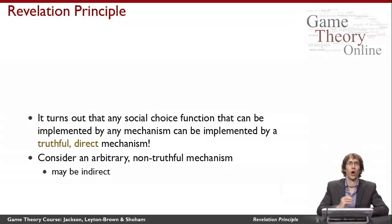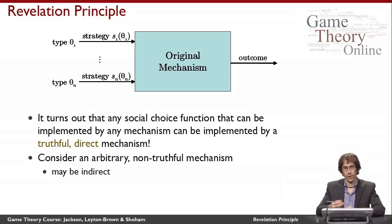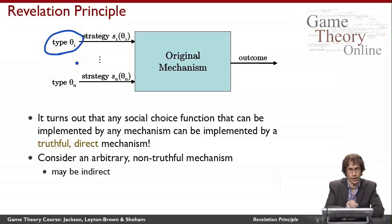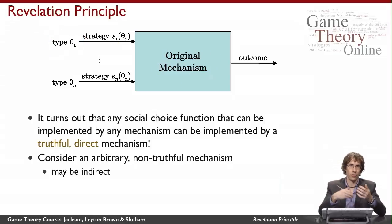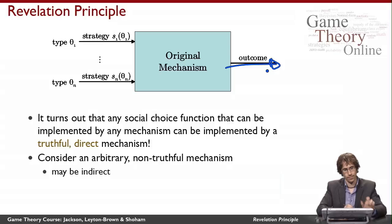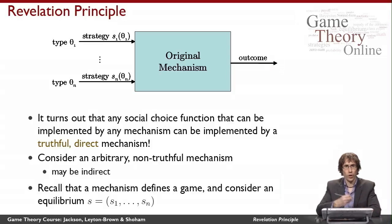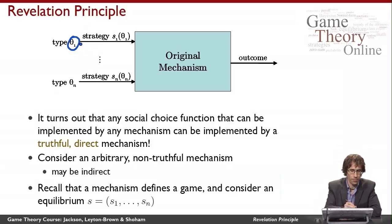I start with an arbitrary, non-truthful mechanism, which may be indirect. What happens is all of the agents have some types, because we're in a Bayesian game setting. They each take some strategy, which is a function of their types, that tells them how to behave inside this mechanism. Then some complicated thing happens — maybe we have information revelation, repetitions of agents acting multiple times — and in the end, the mechanism decides an outcome.